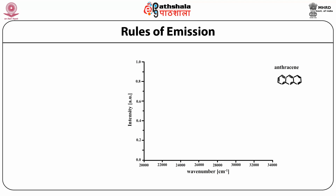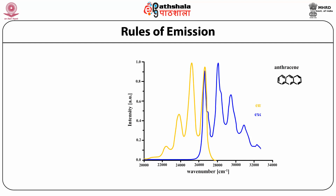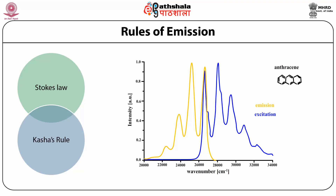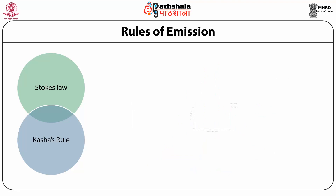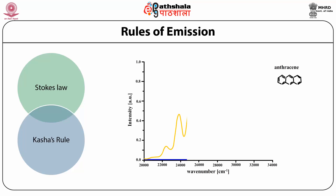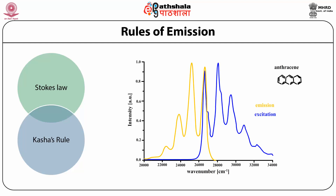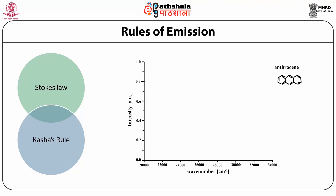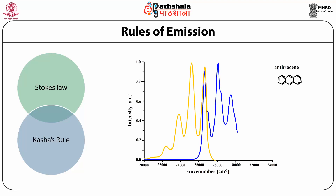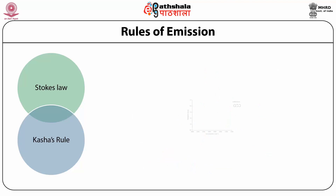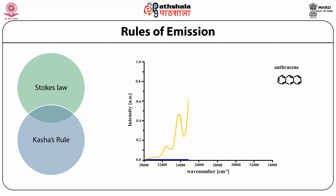There are two rules governing the emission of light from systems: Stokes' Law and Kasha's Rule. Looking at a spectrum where both emission and absorption (excitation) spectra are shown, there is a difference in the wavelengths of the two. Stokes' Law states that the energy of emission is typically less than that of absorption — meaning fluorescence occurs at lower energies or longer wavelengths. This happens because when a molecule is in the singlet excited state it loses small packets of energy, so when it returns it has less energy than the amount it absorbed.